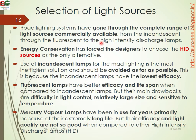What we use includes the incandescent lamp, the fluorescent lamp, and the high-intensity discharge lamp. Energy conservation has forced designers to choose HID sources as they are the only alternatives. Use of incandescent lamps for road lighting is the most inefficient solution and should be avoided as far as possible, mainly because incandescent lamps have very low efficiency.